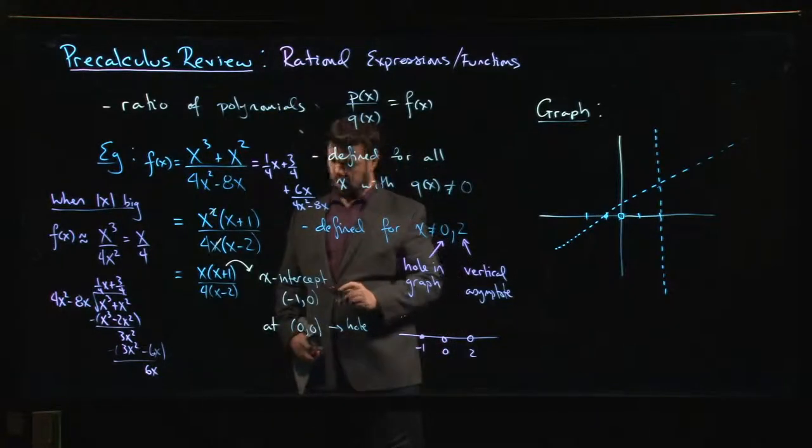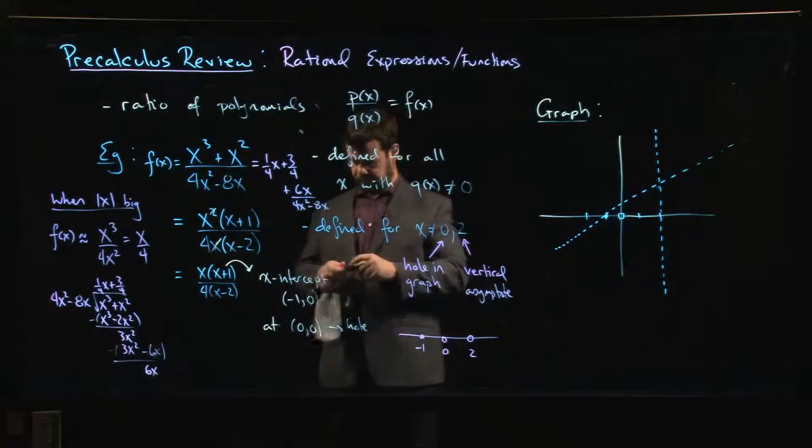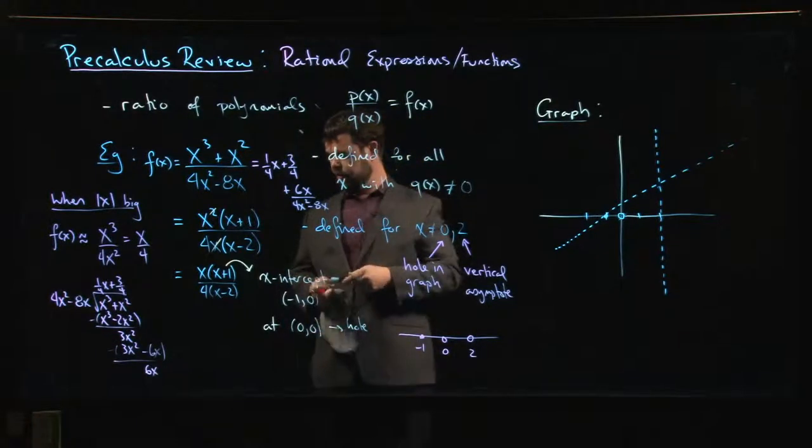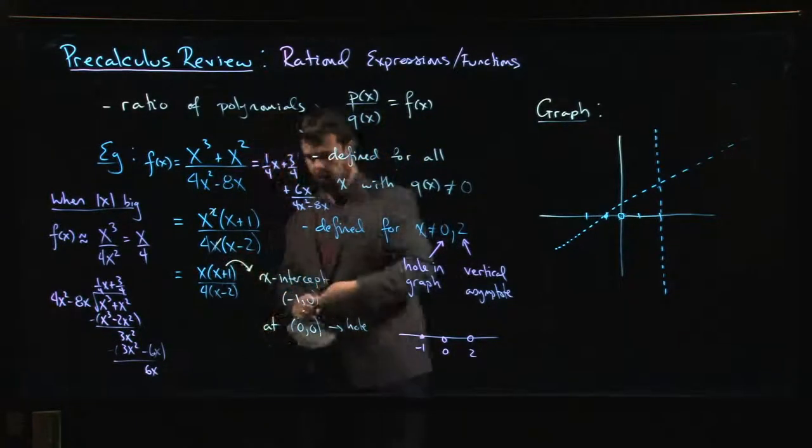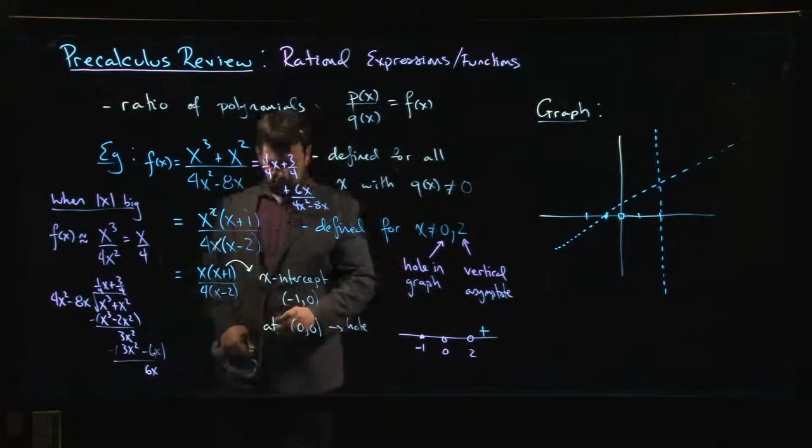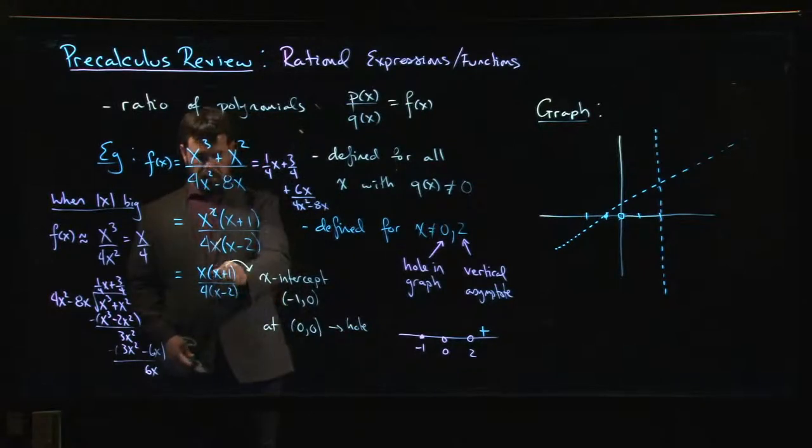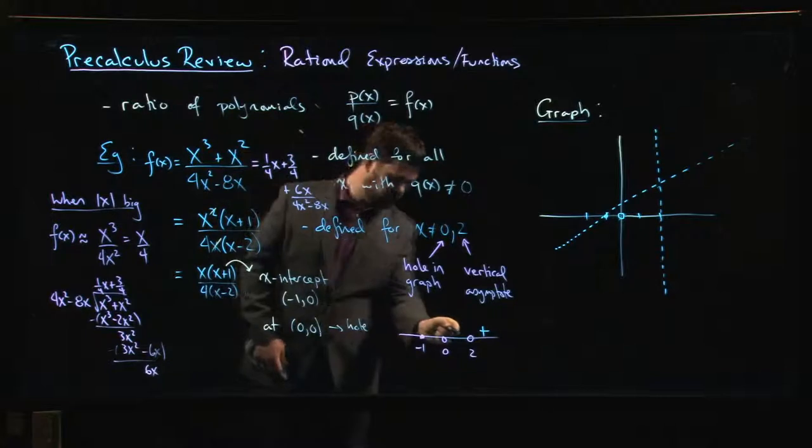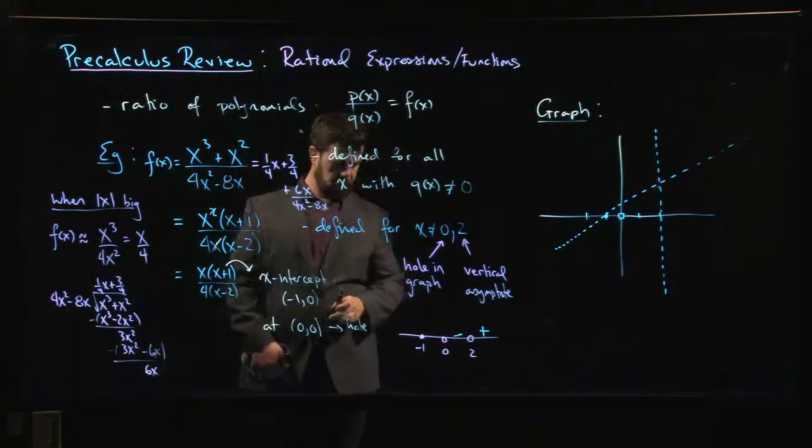And now I just do some test values. I say if x is bigger than two everything in there is positive, plus. What happens when x is between zero and two? Those two factors are still positive, this one becomes negative, so it's going to be negative there.